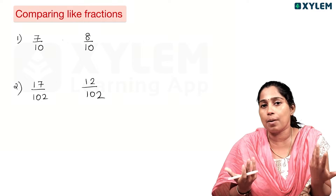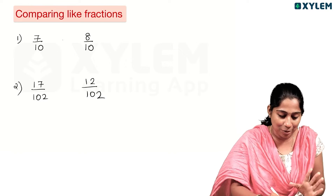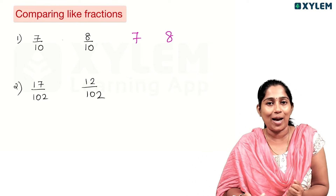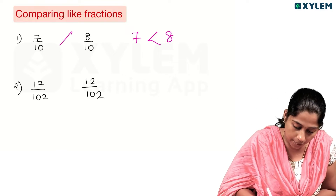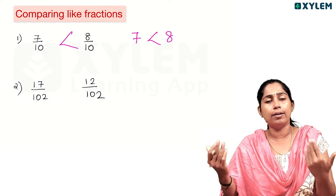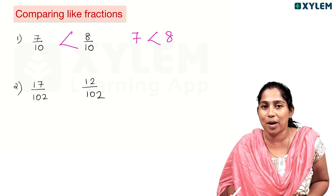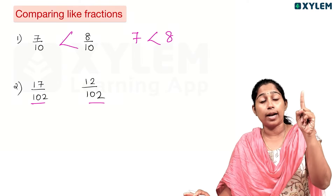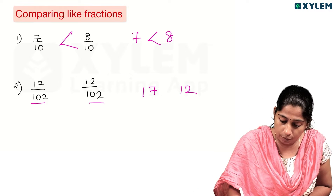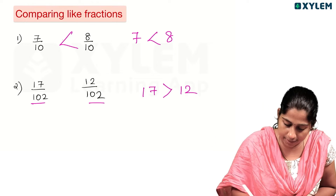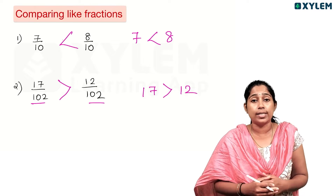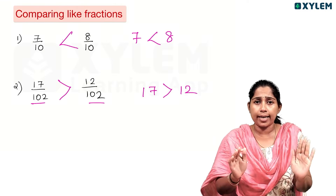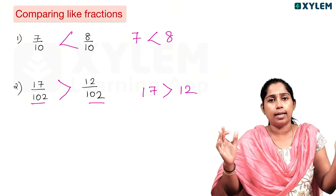How do you compare fractions? This is easy — compare the numerators. For example, the numerators are 7 and 8, so 8 by 10 is greater. The denominator is the same: 102. The numerators are 7 and 12, so we say that 17 by 102 is greater than 12 by 102. It's easy to compare using the numerator. That is your answer.